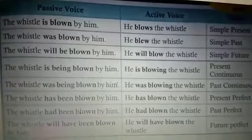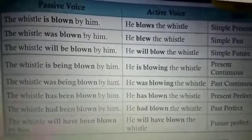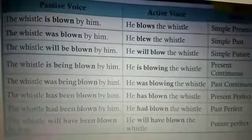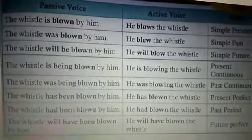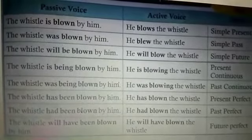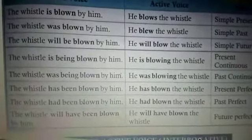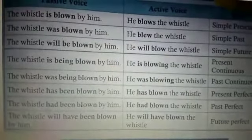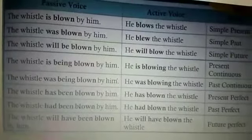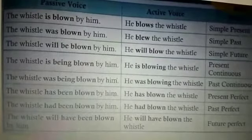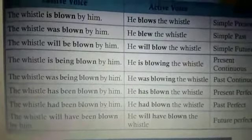Passive 'The whistle is being blown by him' → active 'He is blowing the whistle' (present continuous). Passive 'The whistle was being blown by him' → active 'He was blowing the whistle' (past continuous). Passive 'The whistle has been blown by him' → active 'He has blown the whistle' — 'been' is removed (present perfect).